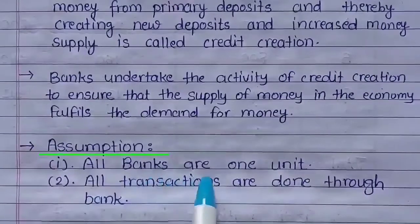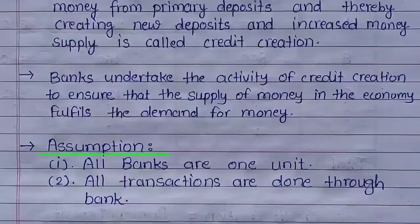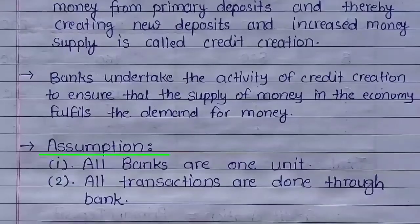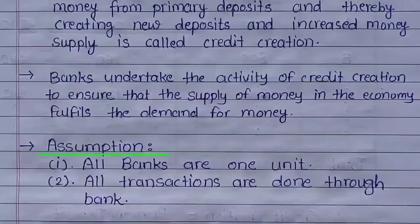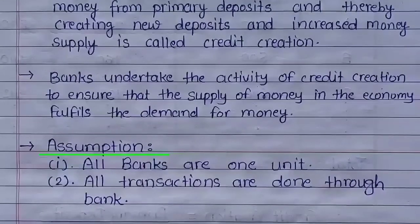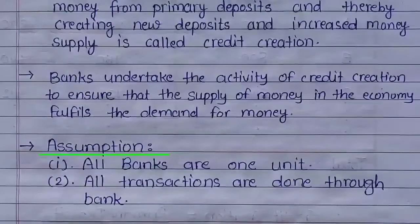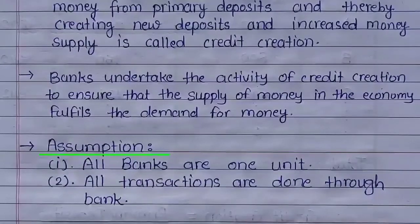Bank के credit creation को समझने के लिए हमें दो assumptions ध्यान में लेने पड़ेंगे. First: all banks are one unit — यानि कि सभी banks अलग-अलग ना होकर सिर्फ एक ही bank unit हैं. उदाहरण के लिए, अगर आपका bank account State Bank of India में है और आपके पास SBI का debit card है, फिर भी आप किसी दूसरे bank के ATM से पैसा withdraw कर सकते हो — यानि सभी bank एक link से जुड़ी हुई हैं और सभी एक ही unit हैं.